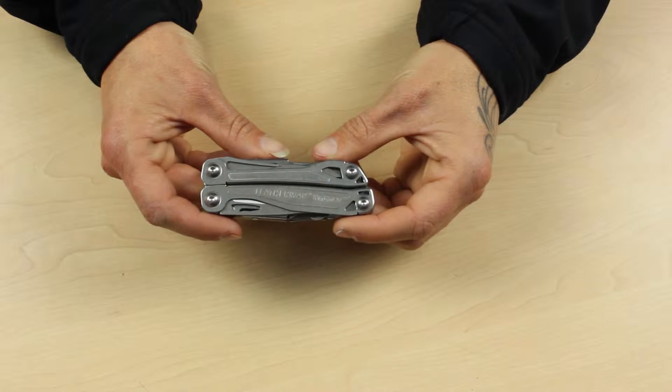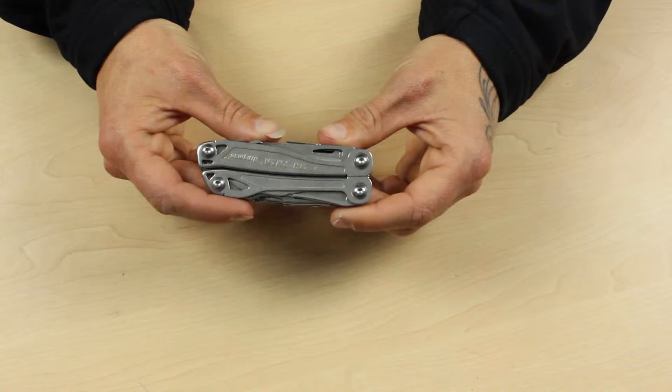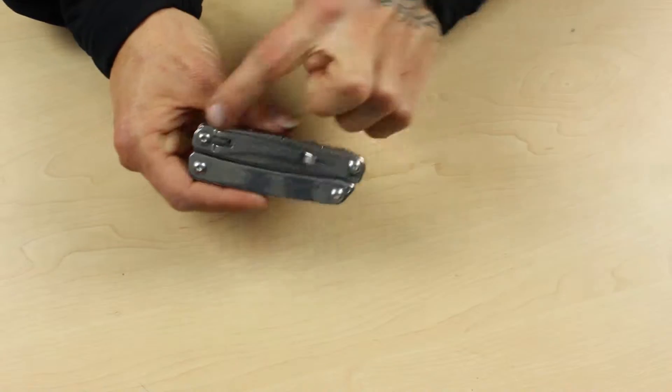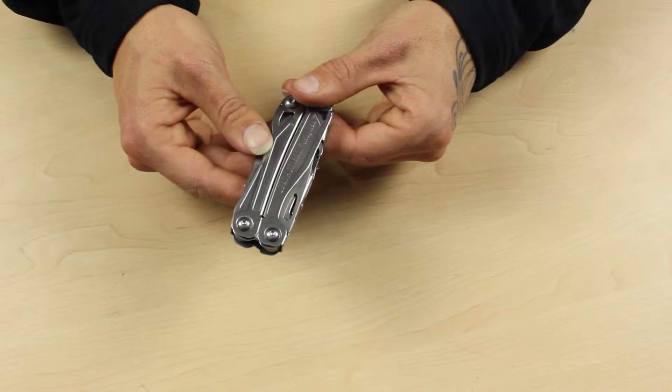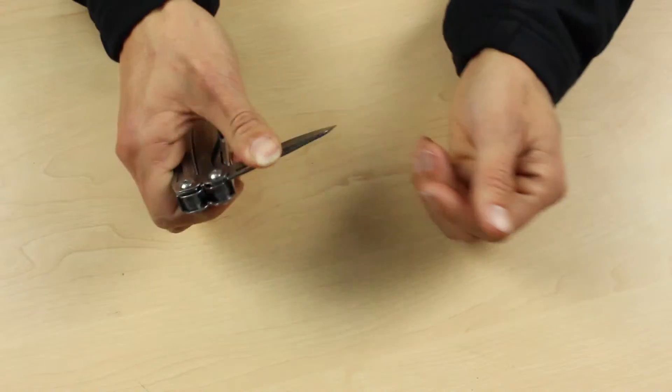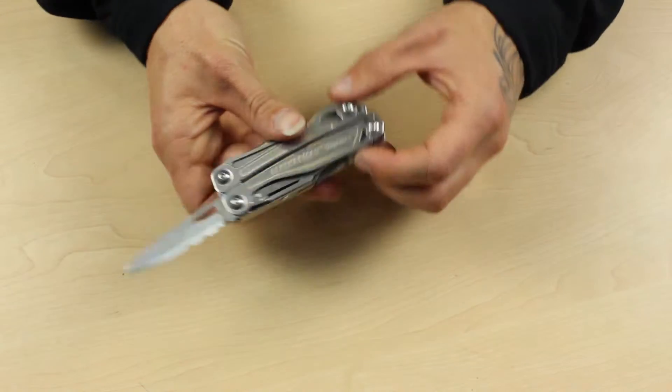Okay, so the Wingman is one of the mid-size multi-tools and as such it doesn't come with a pouch. It's designed to be carried in your pocket, so you'll see it's got that pocket clip over there. One of my favorite things is right off the bat you've got one-handed access to a locking blade.